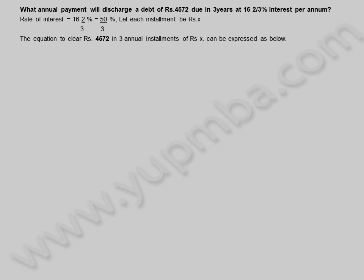What annual payment will discharge a debt of 4572 rupees due in 3 years at 16 and 2 by 3 percentage interest per annum? Rate of interest is equal to 16 and 2 by 3 percentage, which equals 50 by 3 percentage. Let each installment be X rupees. The equation to clear 4572 rupees in 3 annual installments of X rupees can be expressed as below.